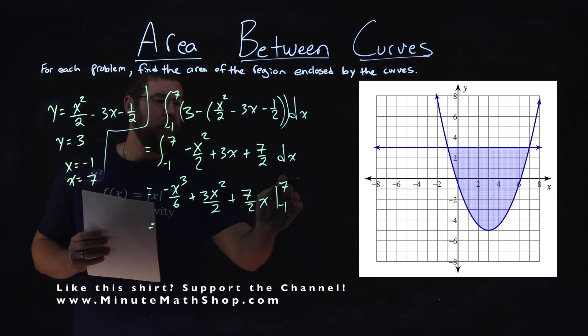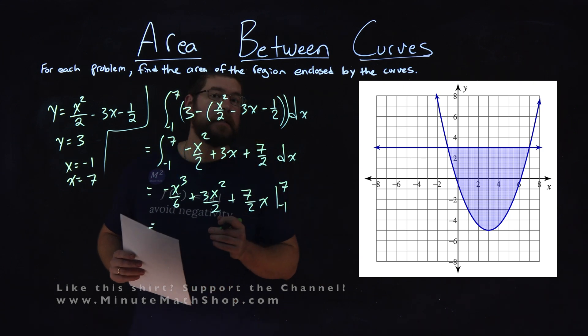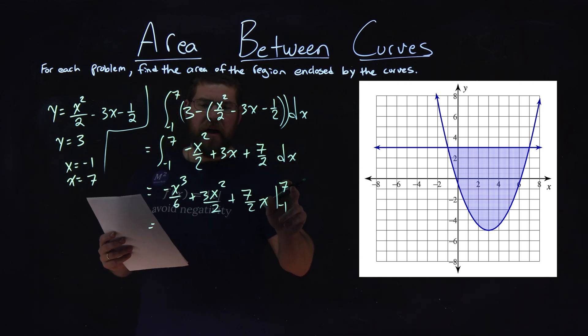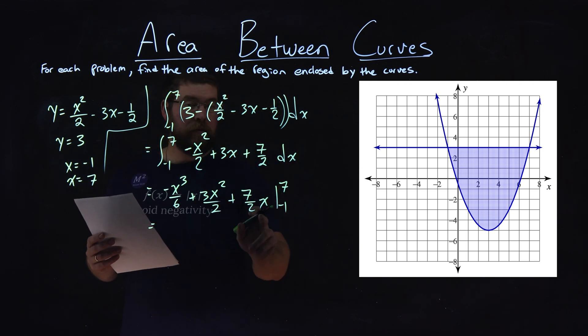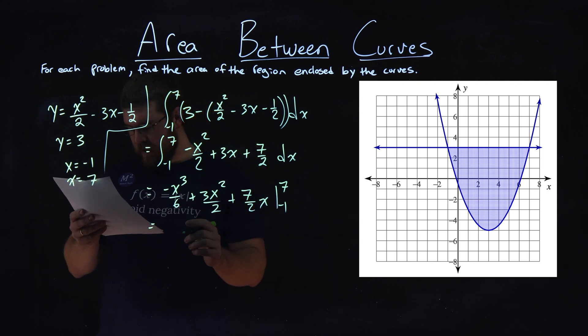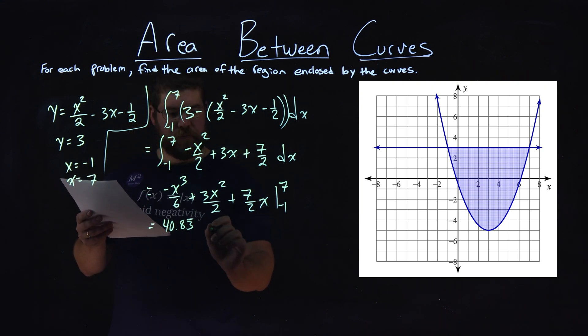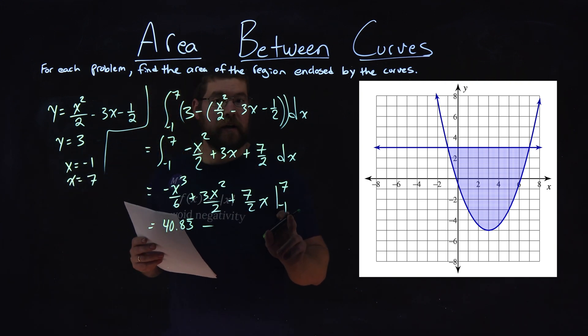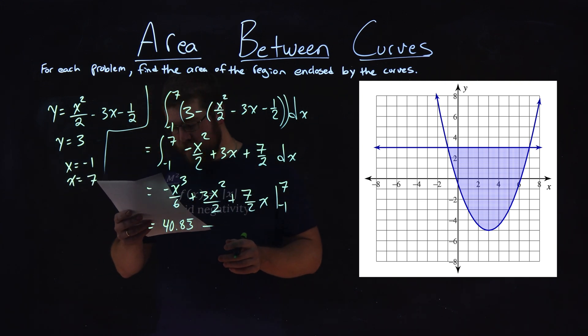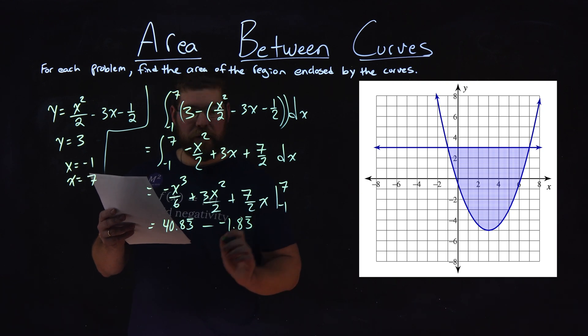From there, we need to plug 7 in for x and simplify that. So I did that for you. When we plug 7 in for x here and simplify it, we get 40.83 repeating. We subtract that and we plug negative 1 in for x, and I did that and simplify it, and I got negative 1.83 repeating.